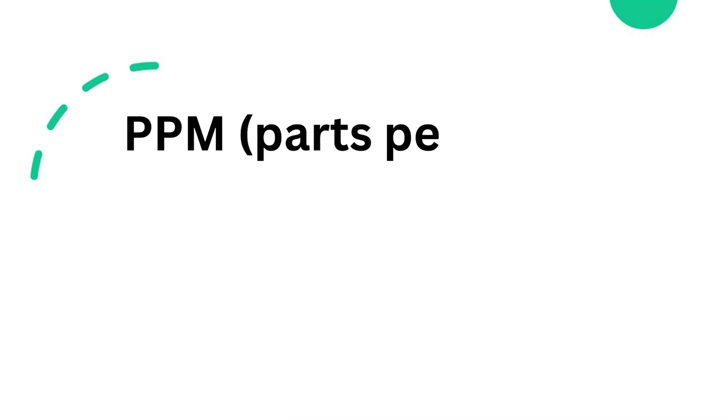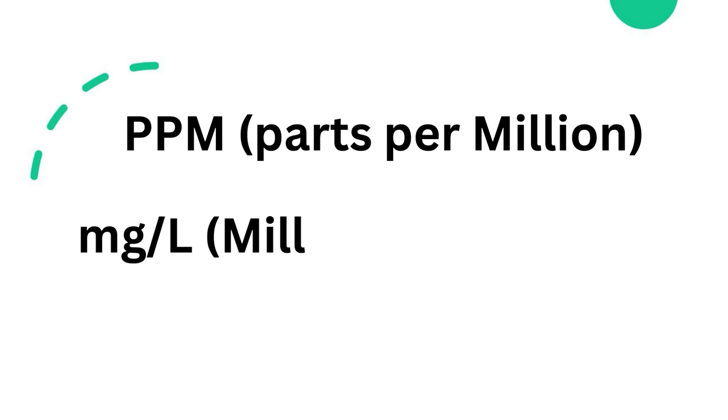Units for measuring dissolved oxygen are parts per million or ppm and milligrams per liter.